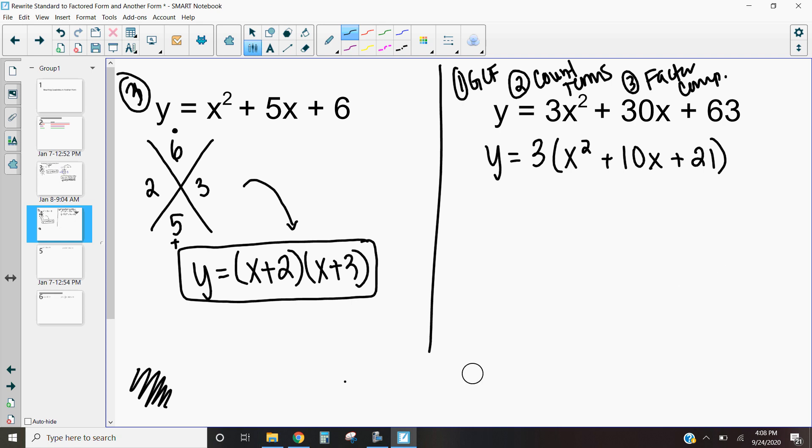And so then all I need to do is factor this portion right here. So let's take a look and factor that. So I get y equals 3. And then we're going to figure out what we need to factor. Let me draw my x. I want two numbers that multiply to 21 and add to 10. Well, those numbers are going to be 7 and 3. So then I get x plus 7 and x plus 3. And look at that.